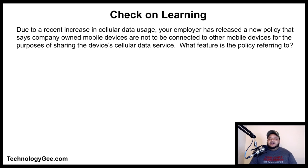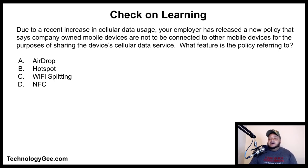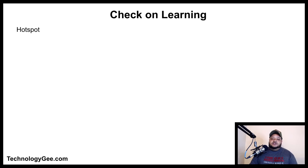Question three: due to a recent increase in cellular data usage, your employer has released a new policy stating that company-owned mobile devices are not to be connected to other mobile devices for the purposes of sharing the device's cellular data service. What feature is the policy referring to? Airdrop, hotspot, Wi-Fi splitting, or NFC? The correct answer is hotspot — they don't want you going around creating hotspots and sharing cellular data.